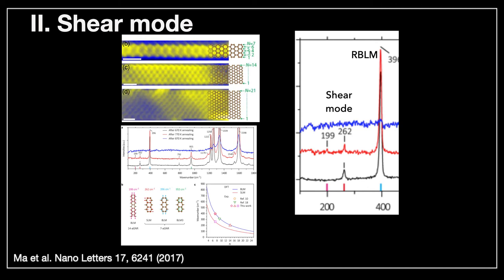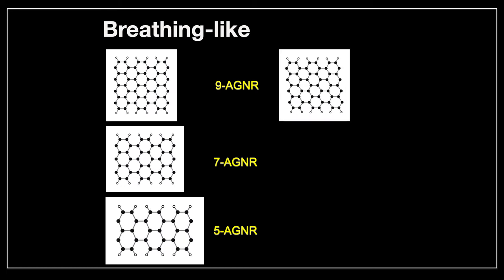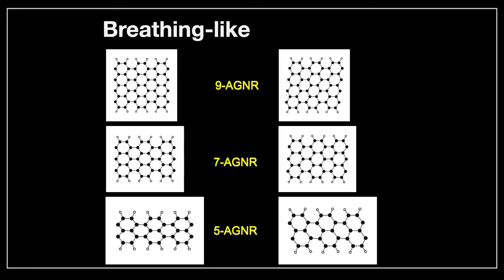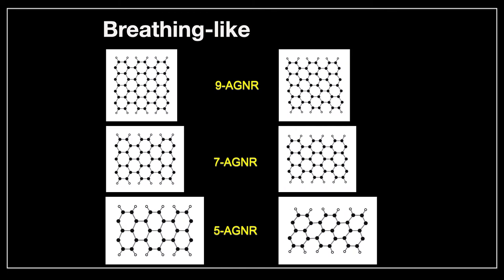There is another mode that's due to the finite width of the GNR. It's a shear mode, and it's very interesting. It was discovered for the first time in that paper. We can understand the difference between the breathing and shear mode. When you look at this, they're completely different, but both of them are related to the finite width of the system.